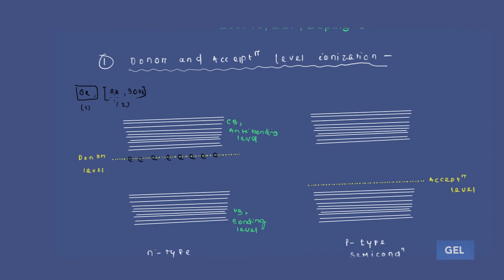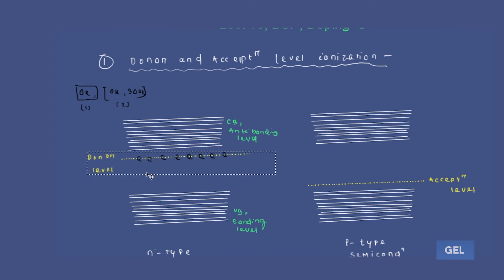Along with the movement of electrons from donor level to the conduction band, the shifting of the donor level also happens within the 0K to 300K range. So two things happen between 0K and 300K: first, electrons start moving from donor level to the conduction band, and second, this donor energy level itself starts shifting toward the conduction band.